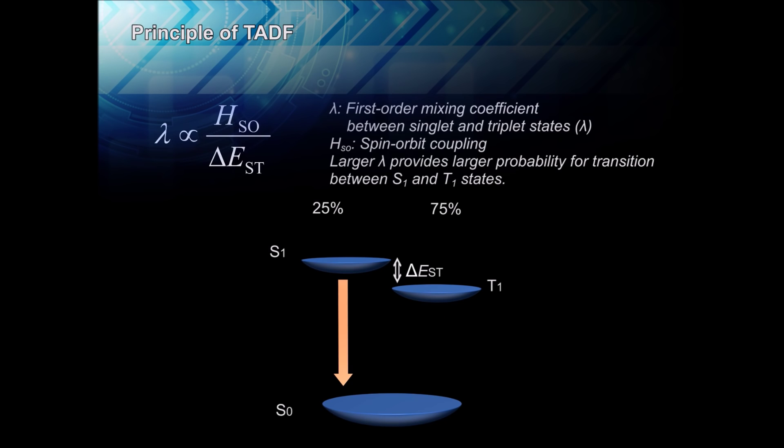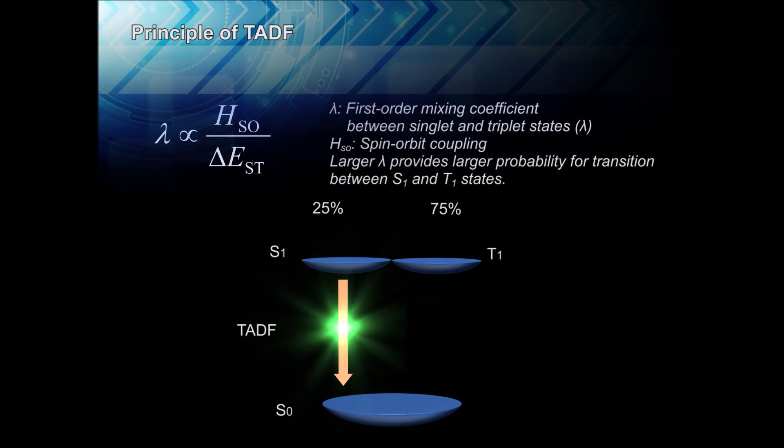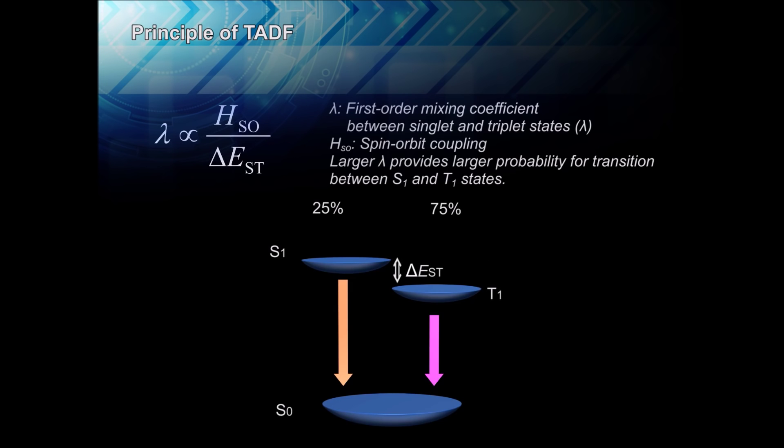By absorbing tiny amounts of thermal energy at room temperature, triplets in TADF materials can easily overcome the small delta EST and convert into singlets. This thermally-activated conversion of triplets to singlets produces delayed fluorescence when the upconverted singlets release their energy as light. Thus, TADF materials can harvest both singlets and triplets, making 100% internal quantum efficiency possible.